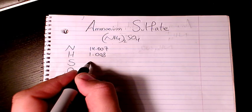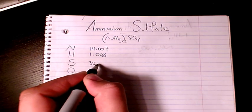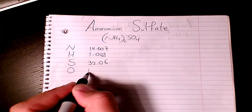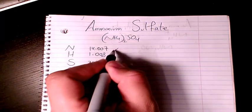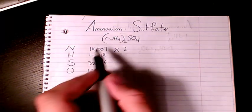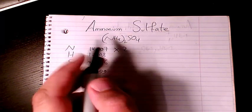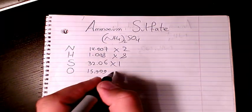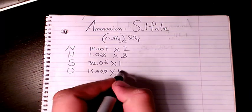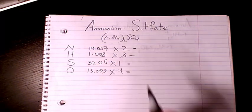Nitrogen: how many do we have? One times two, we have two of them. Hydrogen: four times two, eight. Sulfur: just one, and oxygen: four. So first of all, two times 14.007 is going to be 28.014.